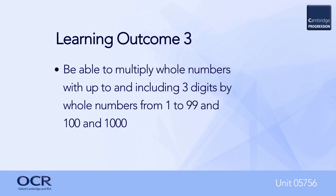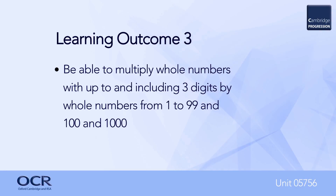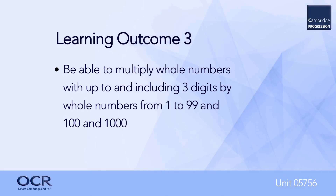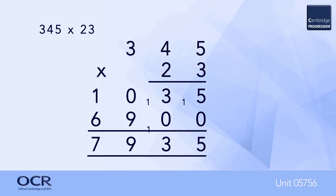For learning outcome number three, learners should be able to multiply whole numbers with up to and including three digits by whole numbers from one to ninety-nine, and by hundreds and thousands. This can effectively be split into two parts: one part dealing with multiplication by any number up to ninety-nine, and the other dealing with multiplication by multiples of ten, one hundred, or one thousand. For example, multiplying three hundred and forty-five by twenty-three and aligning the numbers in the unit column gives the calculation shown here.